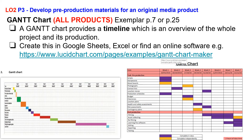In this second task you've got to create a Gantt chart. A Gantt chart gives you a timeline which is an overview of the whole project and your project management of all of the different tasks that you've created in your production schedule.